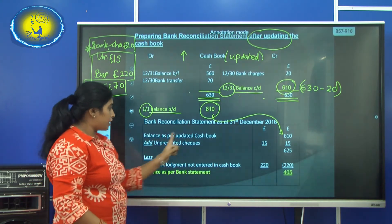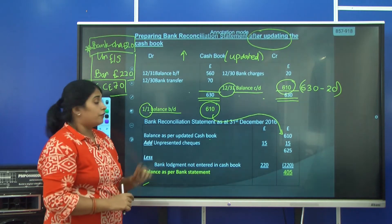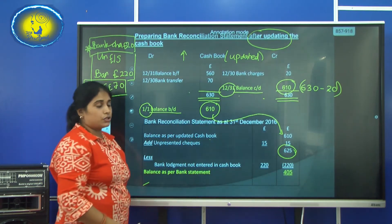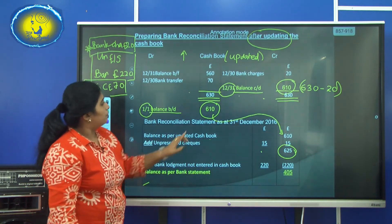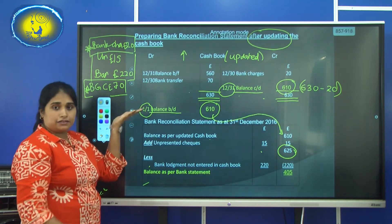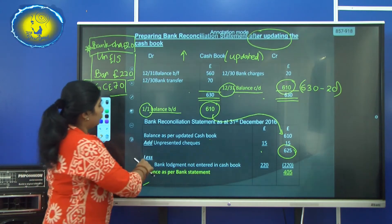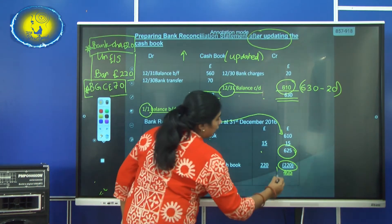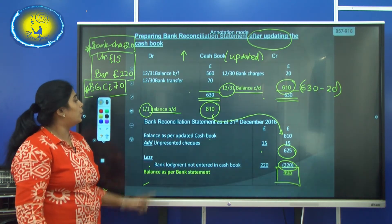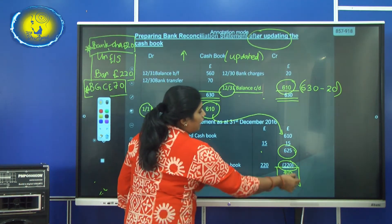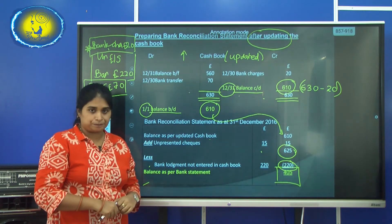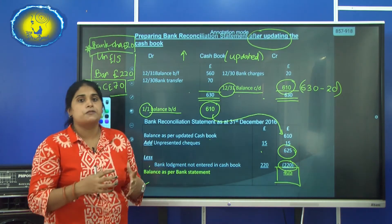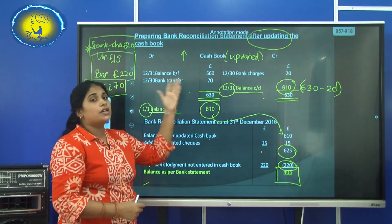Starting with the updated cash book balance of 610, the unpresented cheques are added because they make your balance less than the bank balance — giving 625. Then bank lodgement makes your balance greater than the bank statement, so you deduct 220. After doing that, you again arrive at the same amount shown in the bank statement. We are making this bank reconciliation statement to ensure — as a temporary statement — that our balance is equal to the bank statement balance.